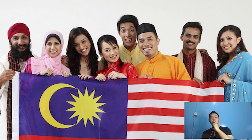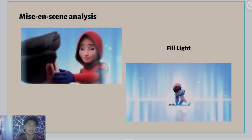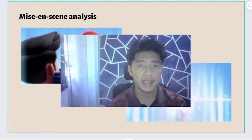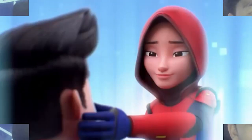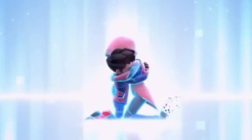Very unique, right? So let's move on to the scene analysis. Fill light is a lighting technique also used in Agent Ali the Movie. Fill light is a secondary light source placed on the opposite side of the key light. Fill light reduces the shadow produced by the key light so that the image looks more natural. In this scene, fill light makes it more realistic and interesting.